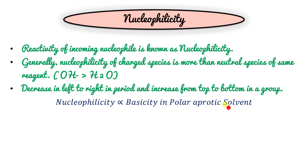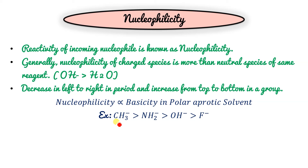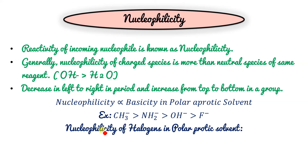In polar aprotic solvents, nucleophilicity is directly proportional to basicity and inversely proportional to electronegativity. So F- has the least nucleophilicity, OH- slightly more, and CH3- the most. For halogens in polar protic solvent: I- > Br- > Cl- > F-. F- is highly electronegative with smaller size and more electronic repulsion, so the lone pair is tightly held — hence lower nucleophilicity.